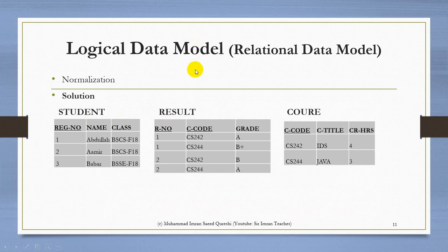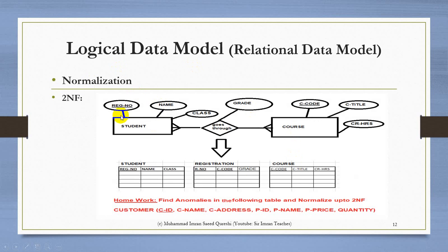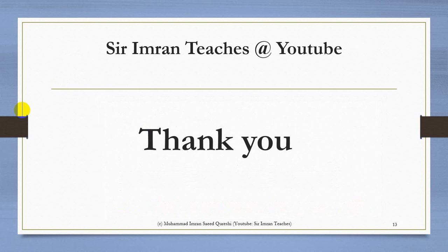We had a poorly designed table from a wrong ERD. Applying 1NF and then 2NF gave us the same tables we would have gotten from a properly designed ERD. My advice: whenever designing a database, make a proper ERD or EERD first — when you reach the logical data model you will have fewer anomalies and less need for normalization. In the next class, we will cover the Third Normal Form (3NF). Thank you very much, Assalamualaikum warahmatullahi wabarakatuh.